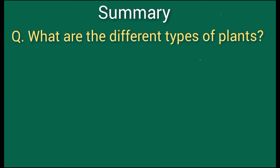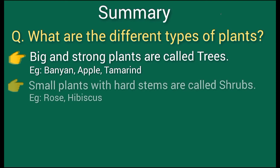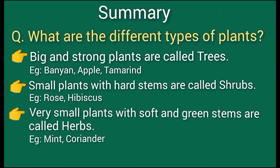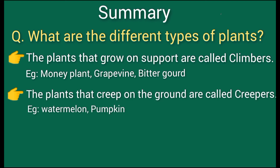What are the different types of plants? Big and strong plants are called trees. Small plants with hard stems are called shrubs. Very small plants with soft and green stems are called herbs. Plants that grow on support are called climbers. Plants that creep on the ground are called creepers.